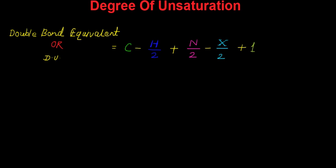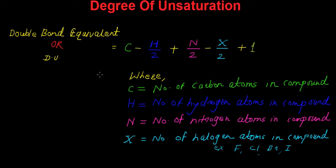Here, C is the total number of carbon atoms present in the compound, H represents the number of hydrogen atoms, N represents the number of nitrogen atoms, and X represents the total number of monovalent halogen atoms in the compound.